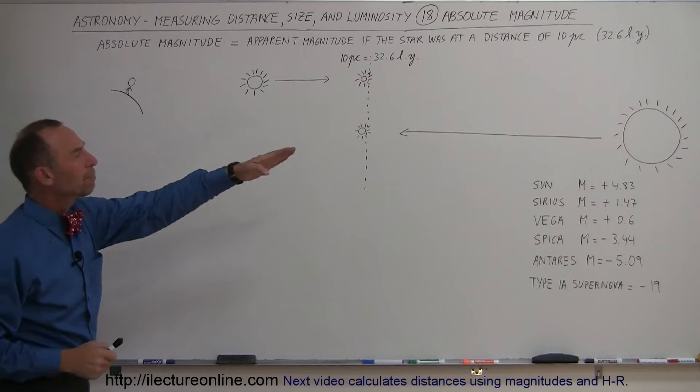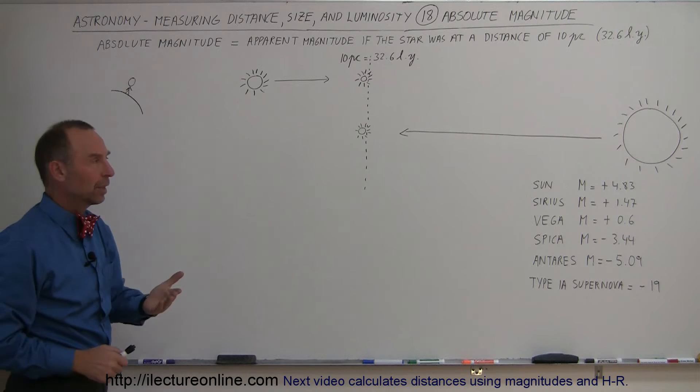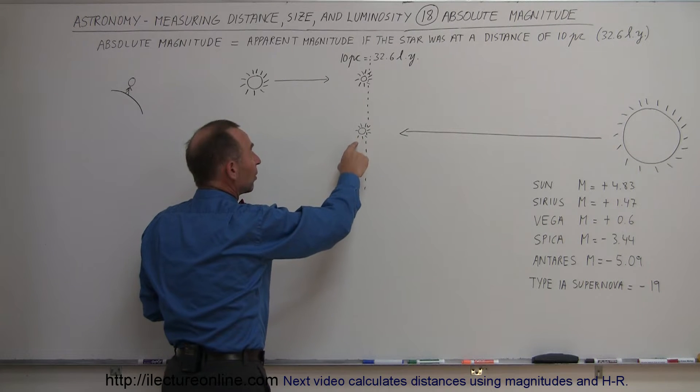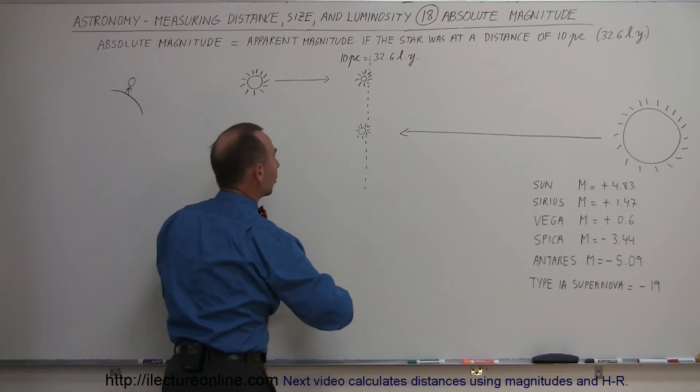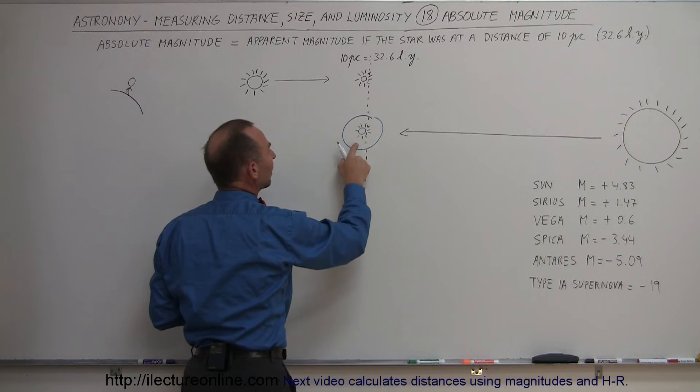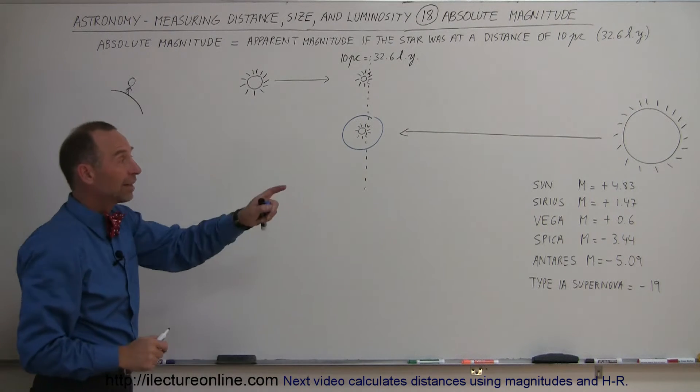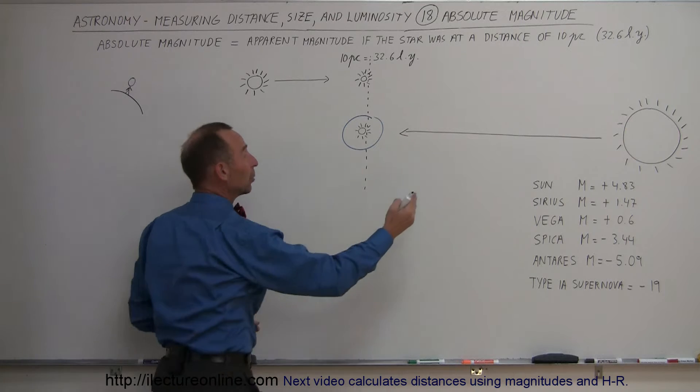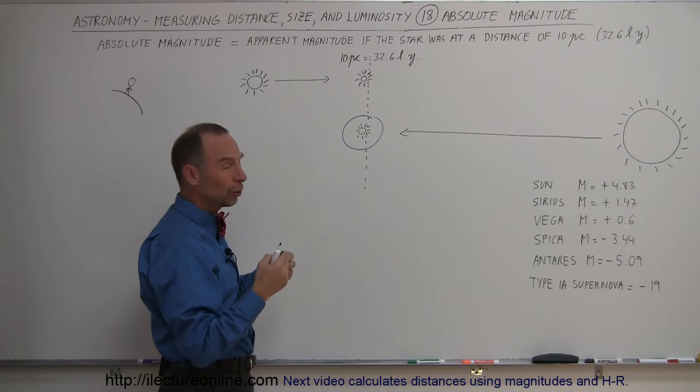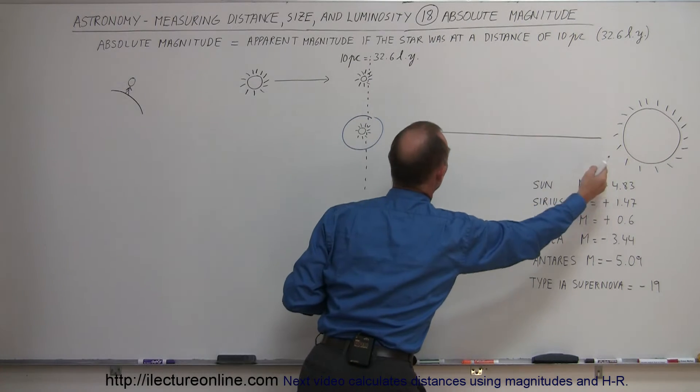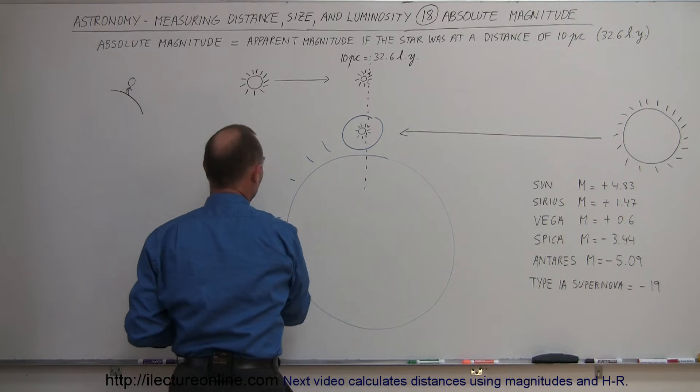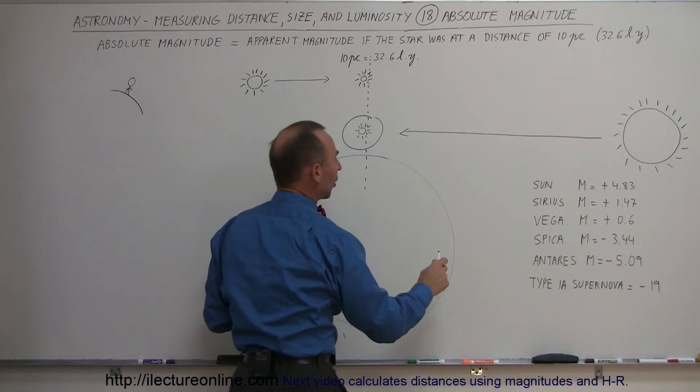Let's say we look at another star, a really big star, but it's really far away. Now, of course, we wouldn't know that it's far away, but it would appear, this is the apparent brightness because it's so far away. Now, what would that star look like when we bring it to a distance of 10 parsecs? Would it look like this? Oh, no, of course not. It would look a whole lot brighter than that. By the time we bring it to a distance of 10 parsecs, it probably looks like this. It would look enormously bright.